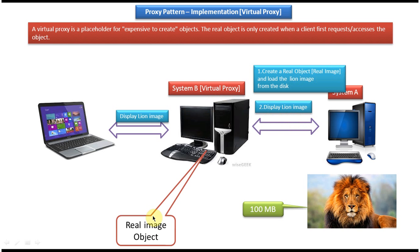The virtual proxy will hold the real image object that was created in the first step. This first step — creating the real object and loading the line image from the disk — is a costly, expensive operation. Now suppose a second display line image request comes from the client to the virtual proxy. The virtual proxy checks and it already has the real image object, because we created that costly real image object in the first request.